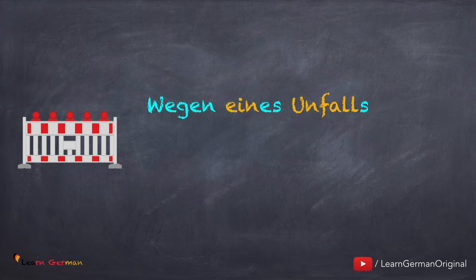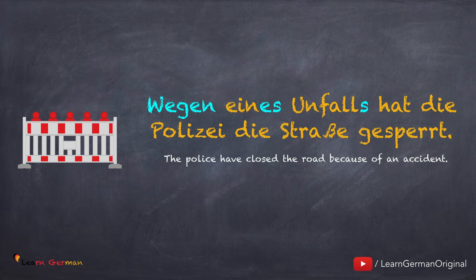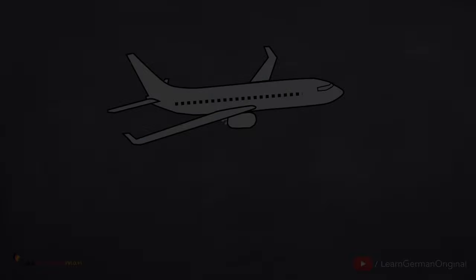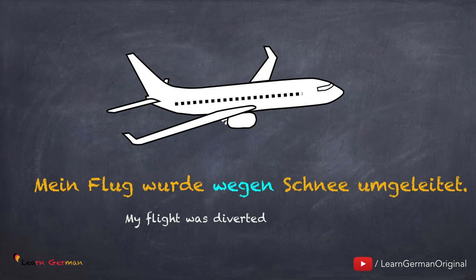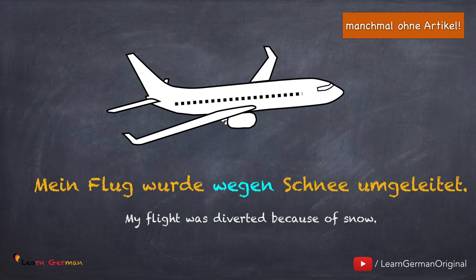Hier ist noch ein Beispiel: Wegen eines Unfalls hat die Polizei die Straße gesperrt. Sätze mit 'wegen' geben eine Begründung. In manchen Fällen benutzt man überhaupt keinen Artikel — zum Beispiel: Mein Flug wurde wegen Schnee umgeleitet. Und weil hier kein Artikel ist, benutzt man keine Genitiv-Endung bei den Nomen in Maskulin oder Neutrum.